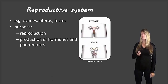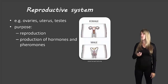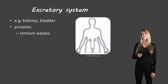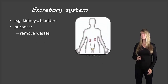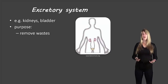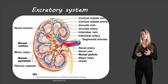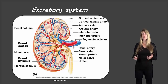The next system is the reproductive system. Organs like ovaries, uterus, and testes are examples, and its main purpose is reproduction and the production of hormones and pheromones. After that is the excretory system, which includes organs like the kidneys and bladder. Its job is to remove waste from the body — kidneys are complex structures that are important for removing waste without losing too much water from the system.